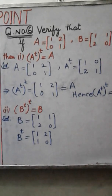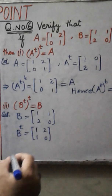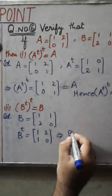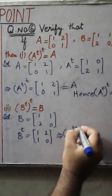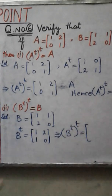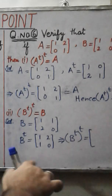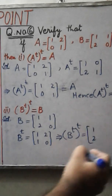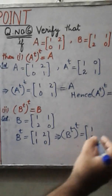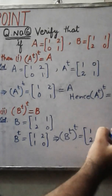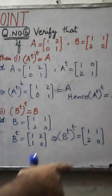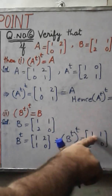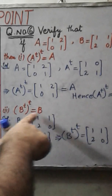Now again we take the transpose of B transpose. The transpose of B transpose: we change the rows into columns — 1, 2 becomes a column 1, 2, and the second row 1, 0 is written as a column 1, 0. Students, we have taken the transpose two times and the final answer is 1, 1, 2, 0, which is equal to matrix B.